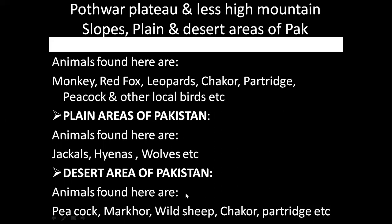In the desert area of Pakistan, animals include peacock, wild sheep, chakor, partridge, and others found in dry and barren mountain ranges like Margalla Hills. Markhor is the national animal of Pakistan, and chakor is the national bird of Pakistan. You can see pictures of national birds and animals from the internet.